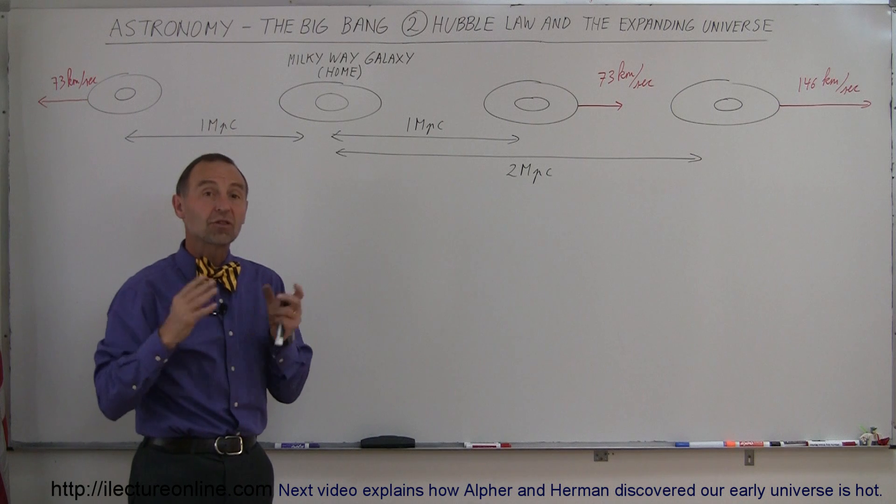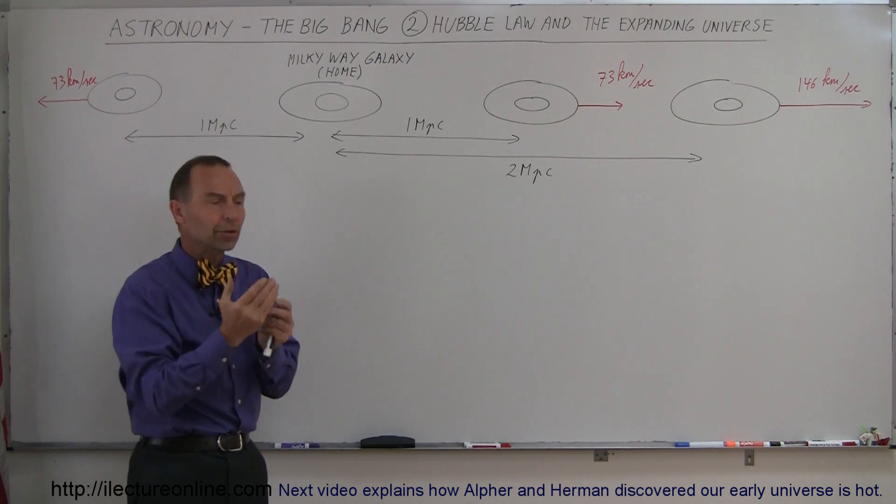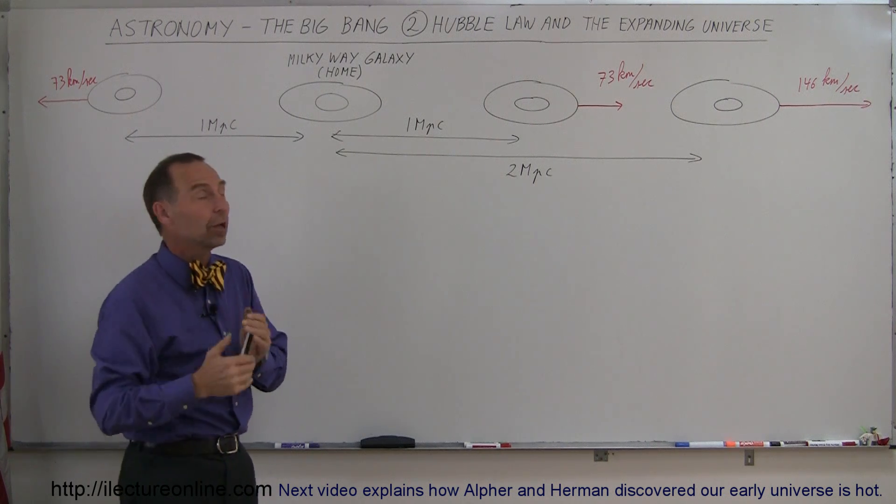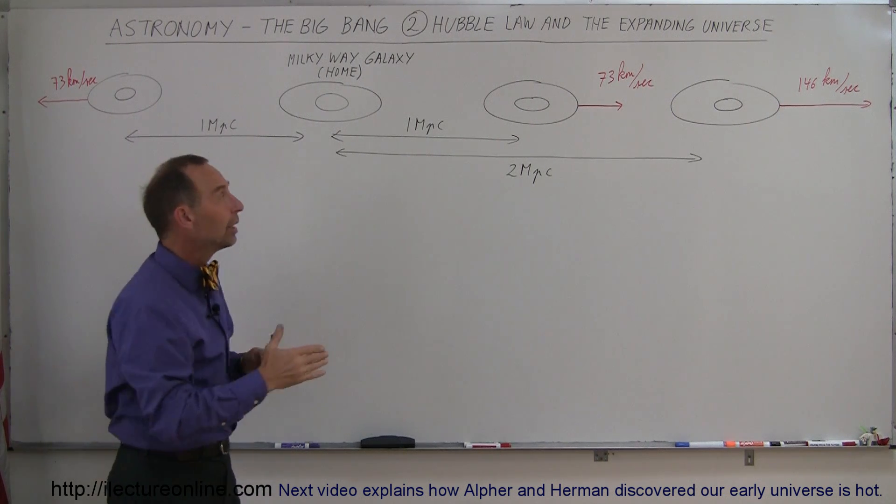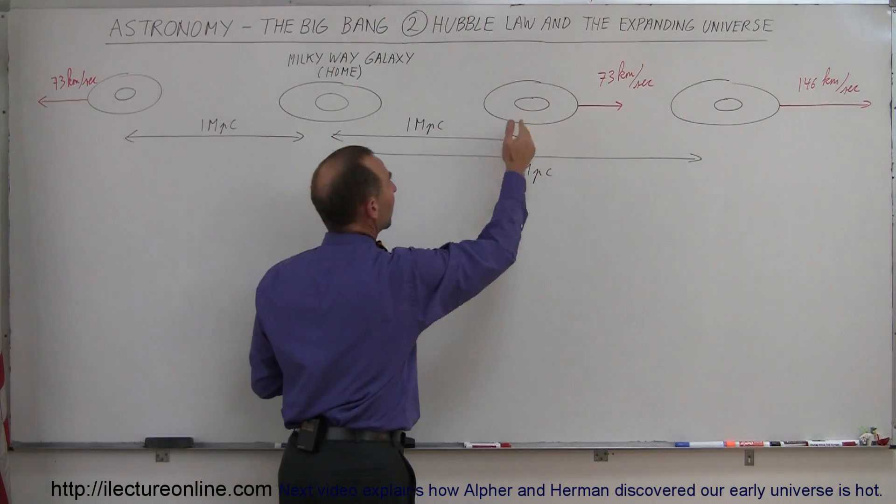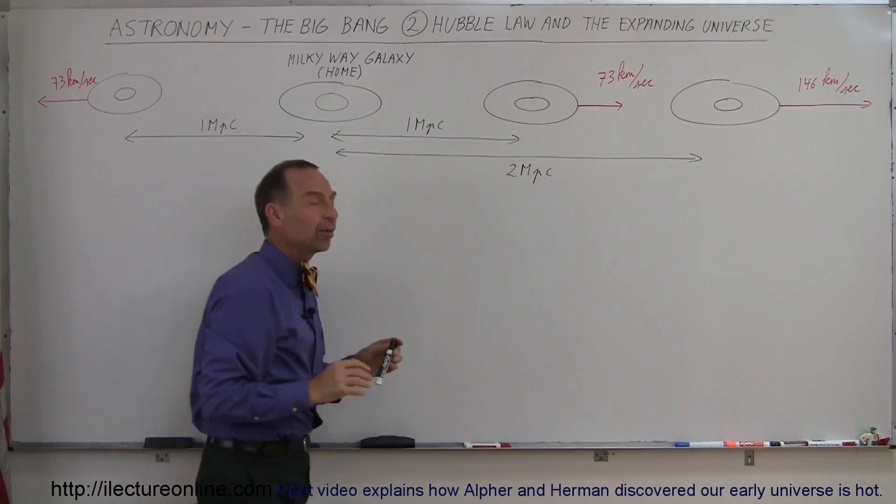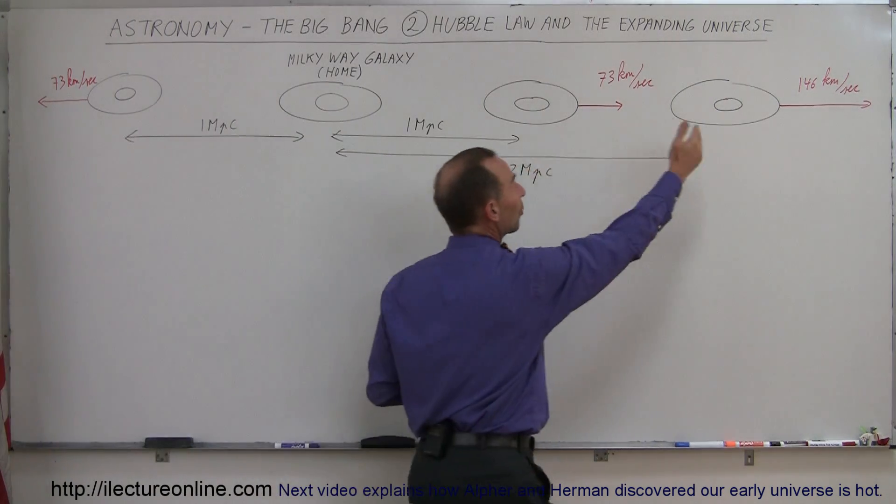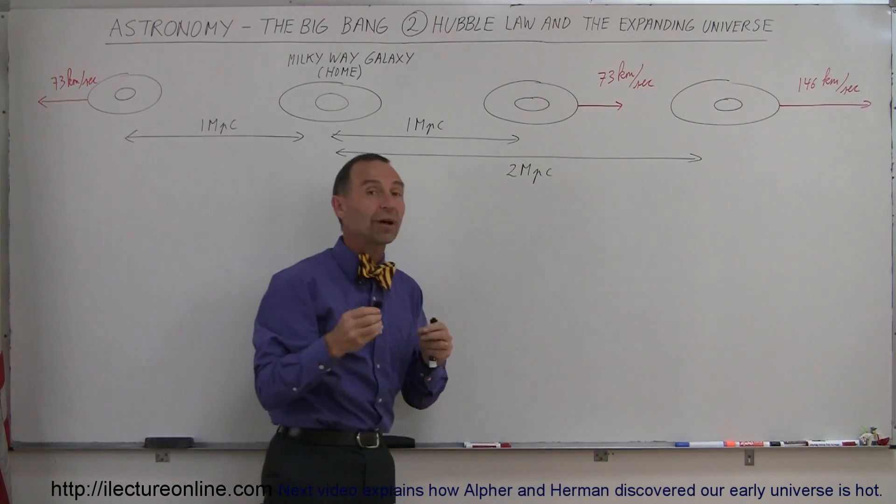But over the years, and especially because of the Hubble Space Telescope, which enabled us to zero in on a more accurate number for what we call Hubble's constant, we now know that when a galaxy is 1 megaparsec away, it will be moving away from us at about 73 kilometers per second, and if a galaxy is twice as far away, it will be moving at a speed twice as fast.